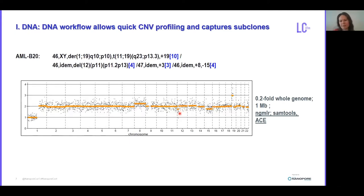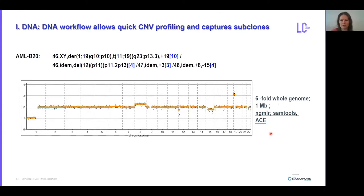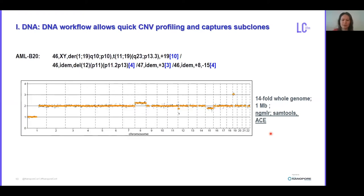By increasing the coverage to 0.2-fold, you can already detect the subclonal aberrations, for example on chromosome 12, as well as the others. And if you increase the coverage to 0.5-fold, the profile is very reliable and you can see all aberrations. If you further increase the coverage to one-fold, six-fold, or 14-fold, you do not detect any additional aberrations in this profile at this resolution.